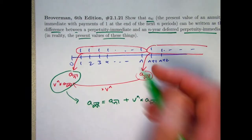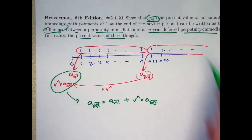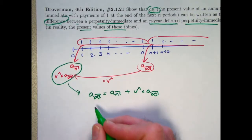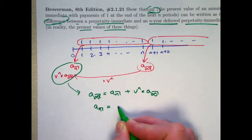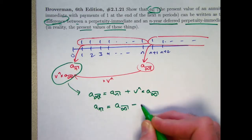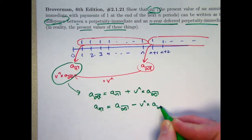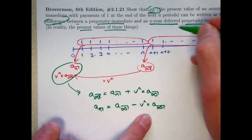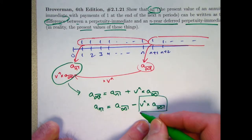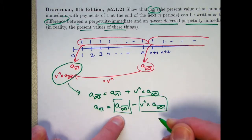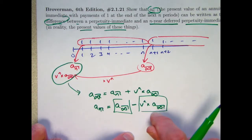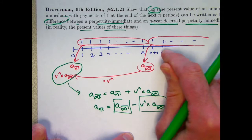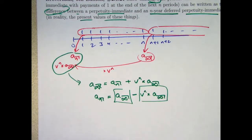To do the problem, we want to write a_n as a difference. We solve the equation: a_n equals a_infinity minus v^n times a_infinity. We've written it as a difference of a perpetuity immediate and an n-year deferred perpetuity immediate — more precisely, their present values. It's not really a proof; it's an intuitive way of thinking that allows you to derive equations and use them in problem solving.